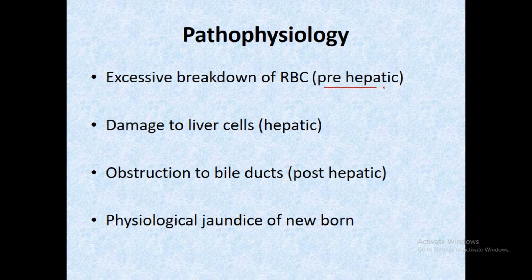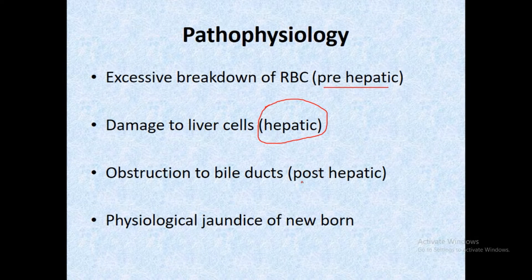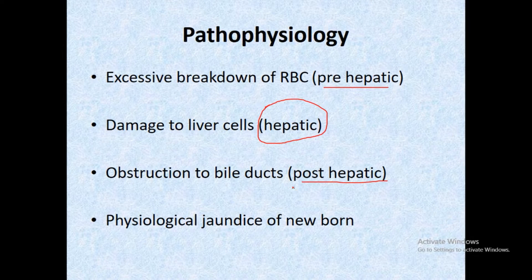This increased bilirubin before entering the liver is known as pre-hepatic jaundice. Whenever there is damage to liver cells, that is hepatic jaundice. Whenever there is obstruction to the bile ducts, that is post-hepatic jaundice.